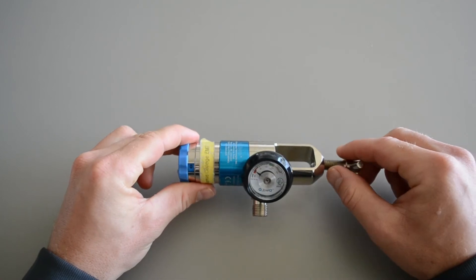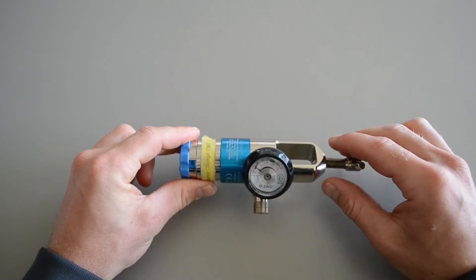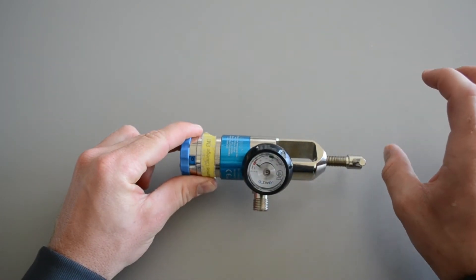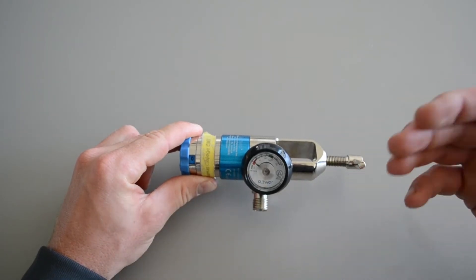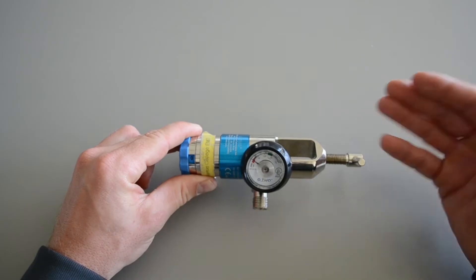So let's talk a little bit about the regulator, this is called the therapeutic regulator. It takes the pressure from inside the bottle, which is very high, and allows us to use it for a BVM, nasal cannula, non-rebreather mask.